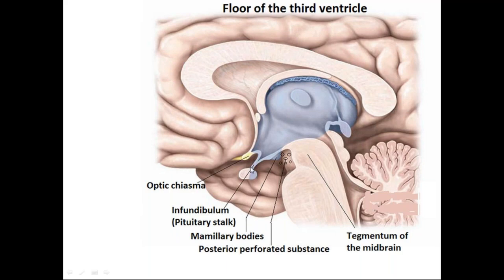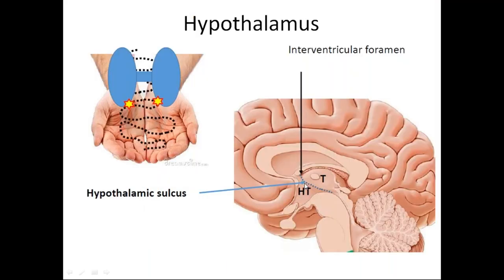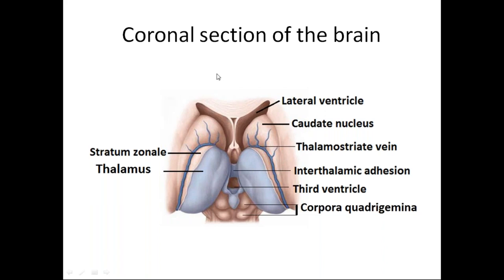You can see the hypothalamus just below the thalamus, located below the hypothalamic sulcus. We will now see the coronal section of the brain and then proceed to the exact hypothalamus, so you will understand the relations.